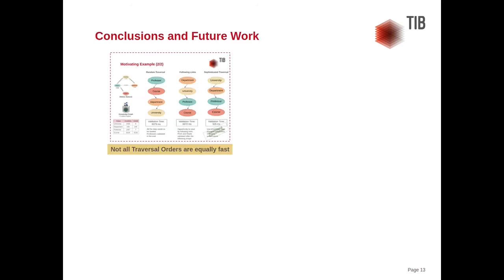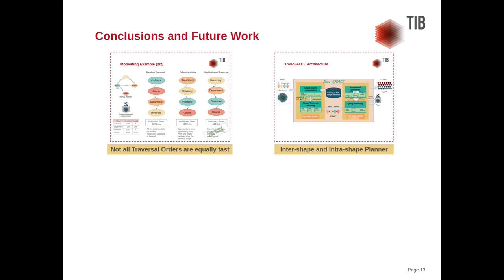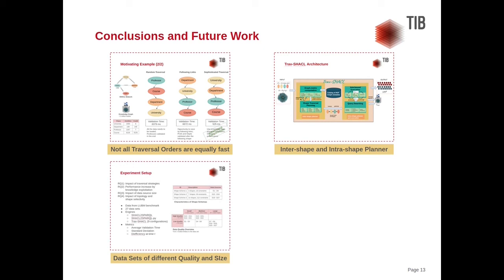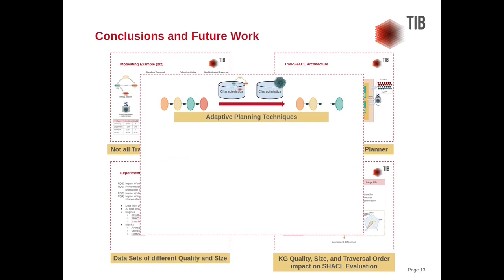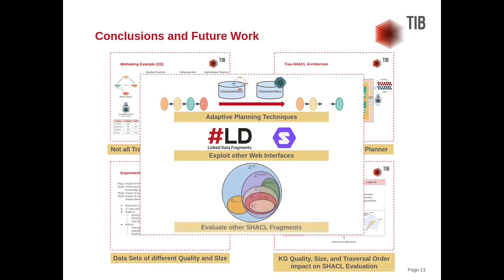To conclude, not all traversal orders can be evaluated equally fast even though they produce the same result. Draft SHACL is a two-fold approach optimizing SHACL network validation at both the intershape and intrashape level. Performance is dependent on data quality, size, and traversal order. Checking constraints in a high quality dataset is costly, while Draft SHACL's performance benefits from low quality data. Future work will investigate adaptive planning techniques to adjust the validation order based on characteristics of both the SHACL network and the RDF knowledge graph, exploit other web interfaces such as linked data fragments or Solid, and evaluate other SHACL fragments beyond those focused on in this work.